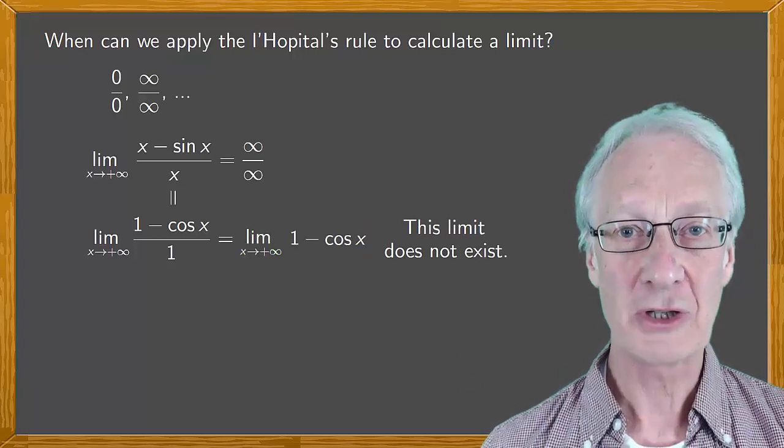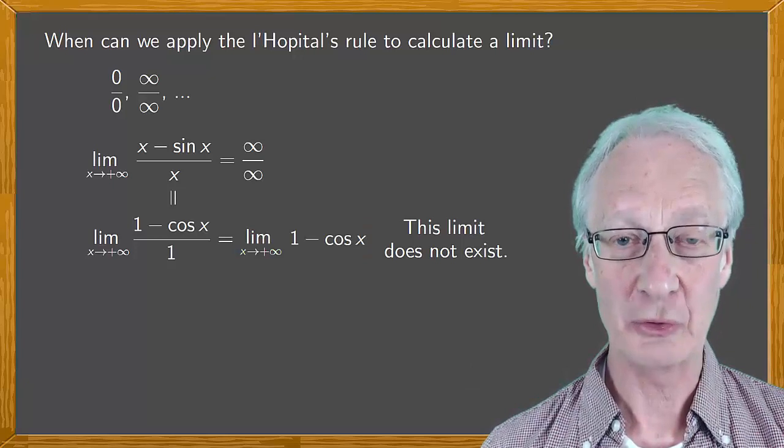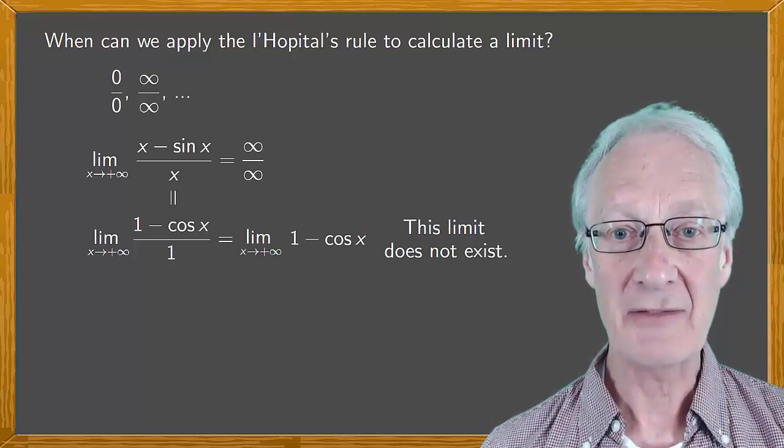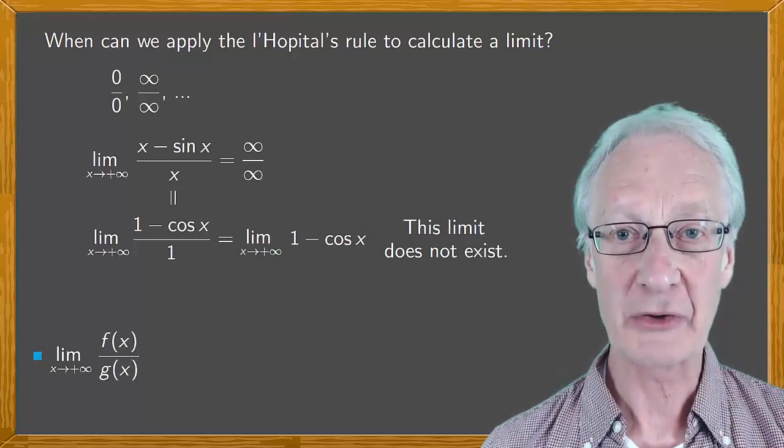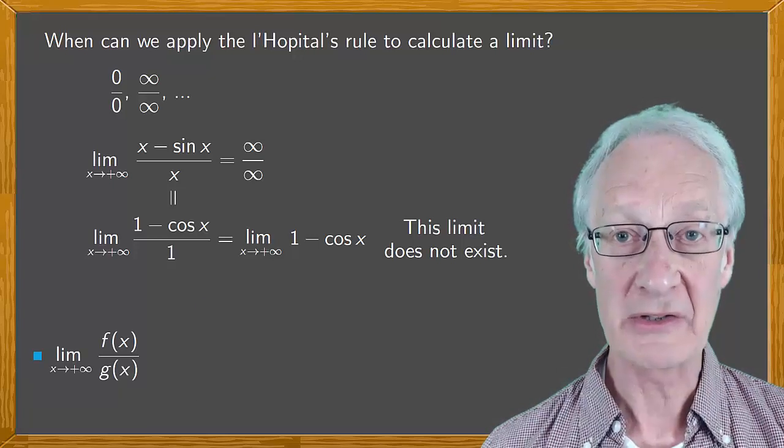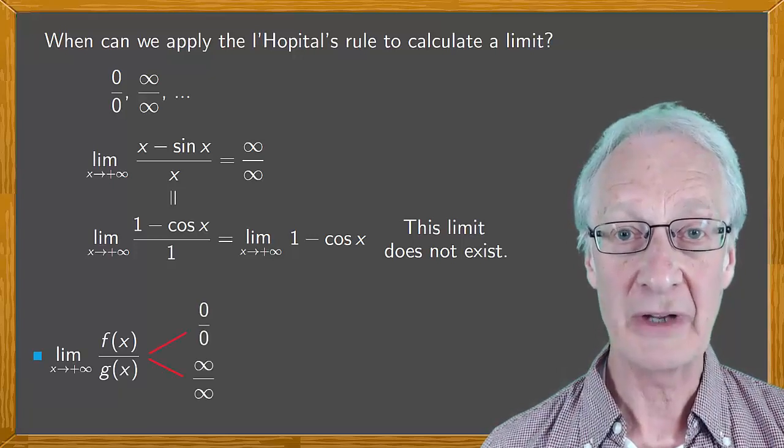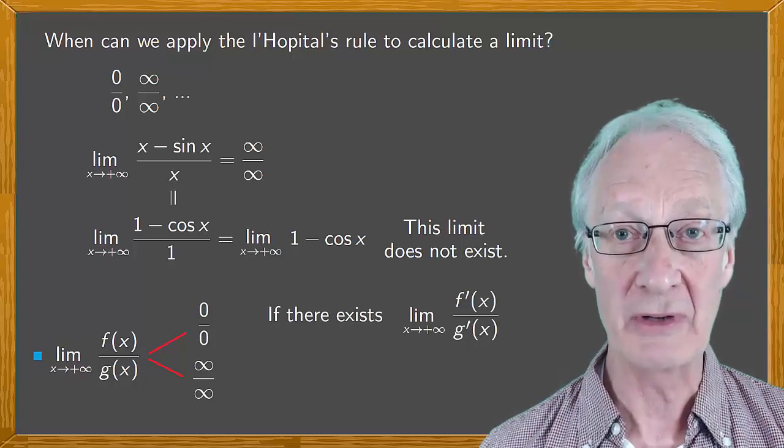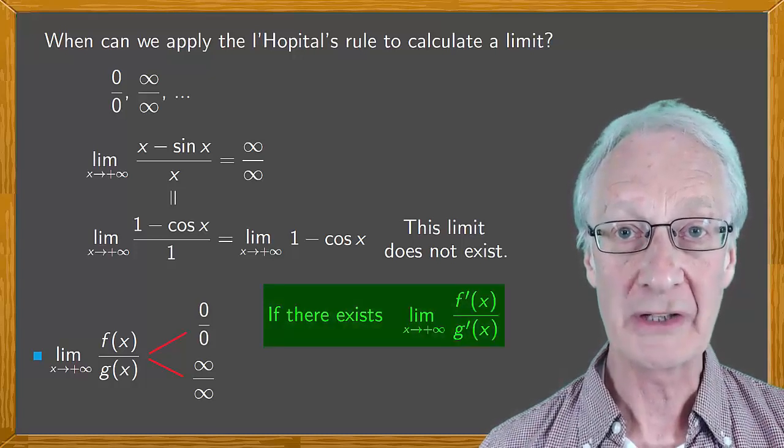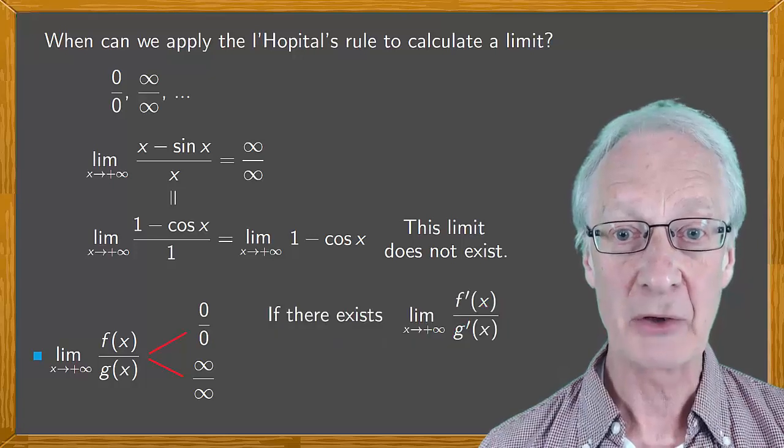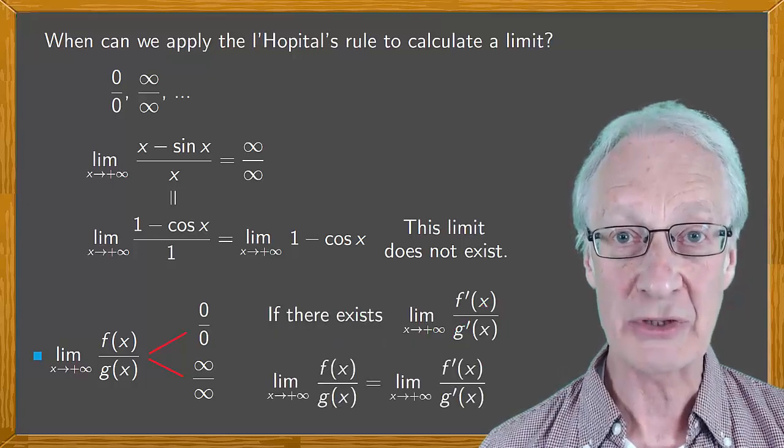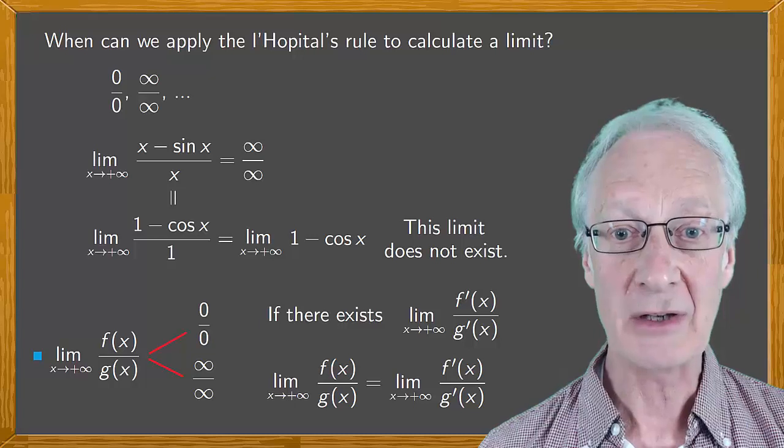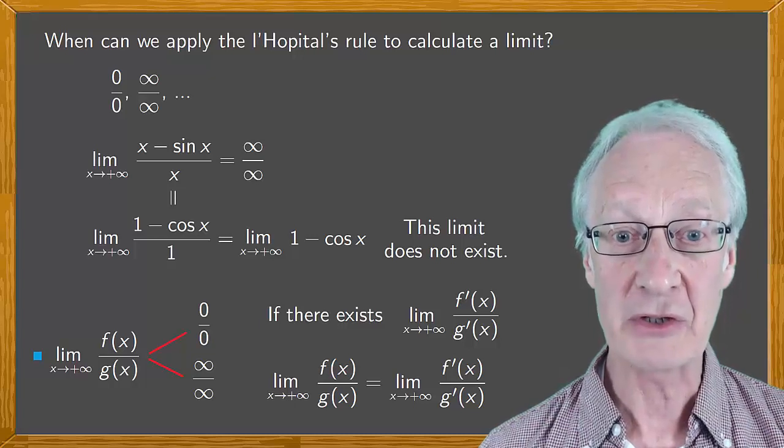Let's look more closely at L'Hopital's rule. It says that if you have a limit that corresponds to the indeterminate forms 0 over 0, or infinity over infinity, if there exists a limit of the quotient of the derivatives, not only does it exist, but also the limit is equal to the limit of the quotient of the original functions.